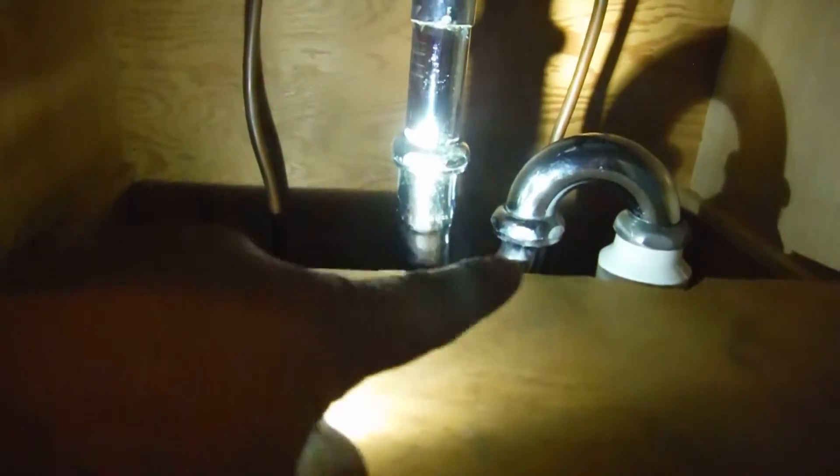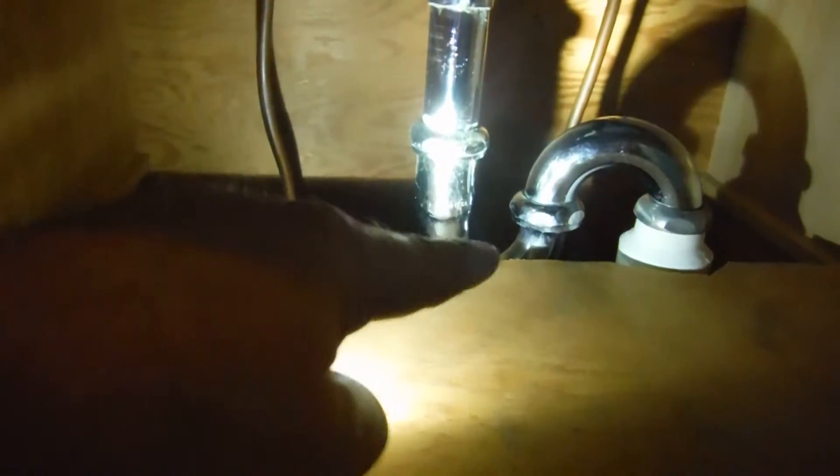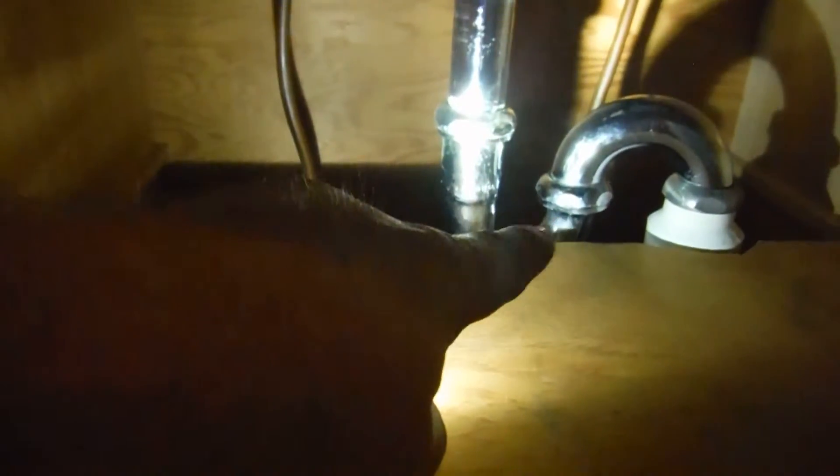When you have an S-trap like this, this second S actually forces it to naturally suck the water out of this bottom P, so you'll have no water sitting inside here.